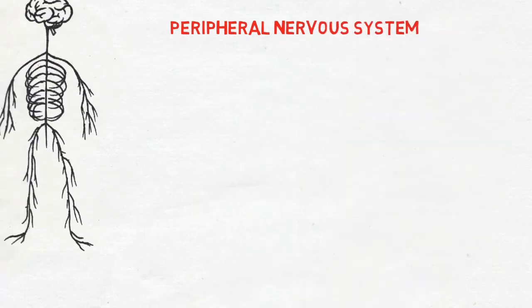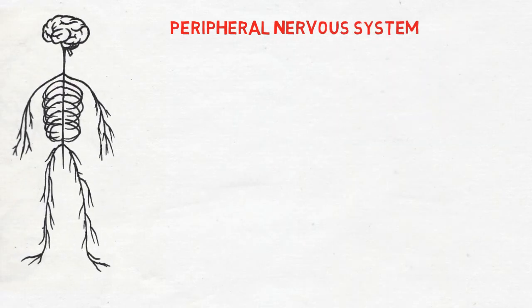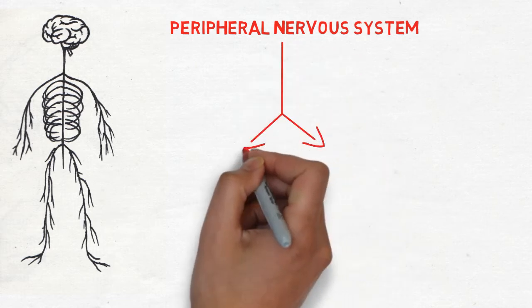The peripheral nervous system is made up of all the nerves and neurons outside the brain and the spinal cord, and is responsible for carrying information to and from the central nervous system.